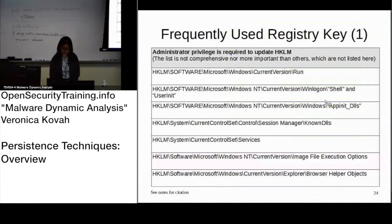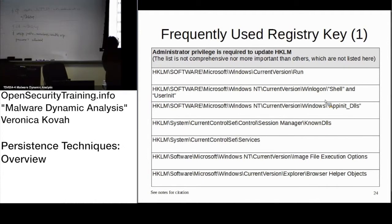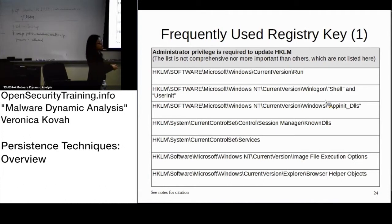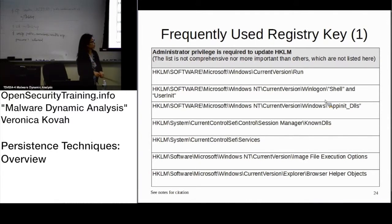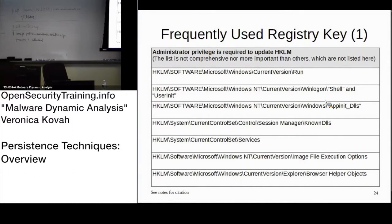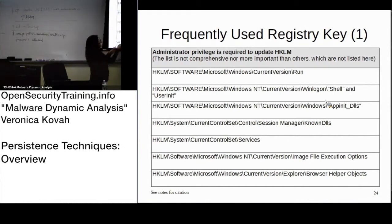Moving to page 24 — for registry keys, these are just common ones that are used. It does not mean that unknown registry keys used for persistence are less important; those are keys you should make sure you are not missing. When a user logs on, for the shell — like the Winlogon shell — if there is any executable path specified for these registry keys, those executables are executed once a user logs on to the system.